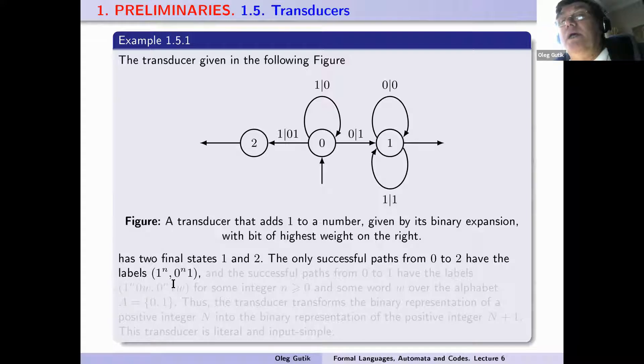The only successful paths from 0 to 2 have the labels (1^n, 0^n|1). If we go from 0 to 2, there are many paths, and the successful paths from 0 to 2 have the labels 1^n because we have one to the power n and zero to the power n plus one.